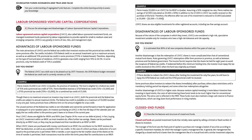Shares can be purchased directly by an RSP trust or they may be purchased and then transferred to an RSP or RIF. When LSVCC shares are purchased with money contributed to an RSP, the contributor receives the RSP tax deduction as well as any available LSVCC tax credits. In the case of a direct purchase, a deduction equal to the purchase price is permitted. With a transfer, a sum equal to the fair market value of the shares at the time of transfer is permitted. Both transactions must be within the limits prescribed for contributions to an RSP. Here's an example: Pierre invests $5,000 in an LSVCC for his RSP in Quebec. Assuming a 50% marginal tax rate, Pierre realizes tax savings of $2,500 in addition to the $1,500 in LSVCC tax credits, reducing the effective after-tax cost of his investment from $5,000 to $1,000.